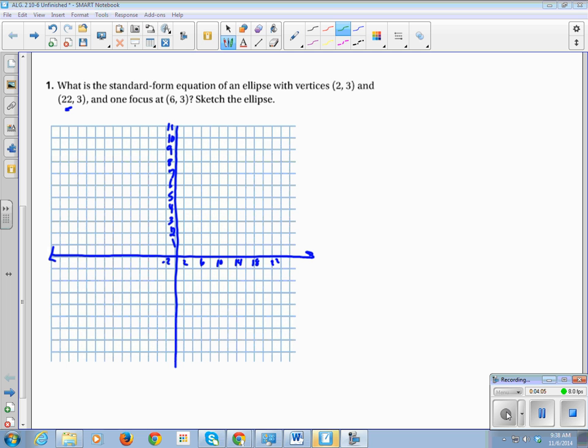So, we've got vertices at (2,3). So, we go over 2, up 3. I'm going to put a v for vertices. And (22,3). And one focus at (6,3). So, it's an ellipse. So, focus is at (6,3). Okay, and that's all we can put down. Because we don't know what our, we know our a value is going to be half the distance between our vertices. So, let's draw that in.